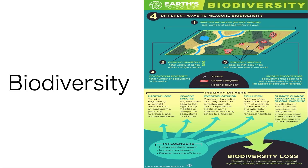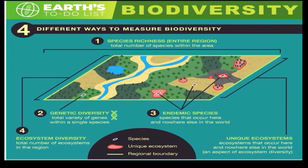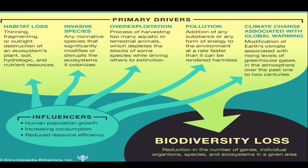The next term is biodiversity — that's the measurement of how many different organisms there are and how many of each. We did that in a parking lot experiment. This includes species richness (how many total species), endemic species (those found only in a specific region), genetic diversity within species, and overall ecosystem diversity. There are many ways biodiversity can decline, especially through human-caused or anthropogenic impacts.